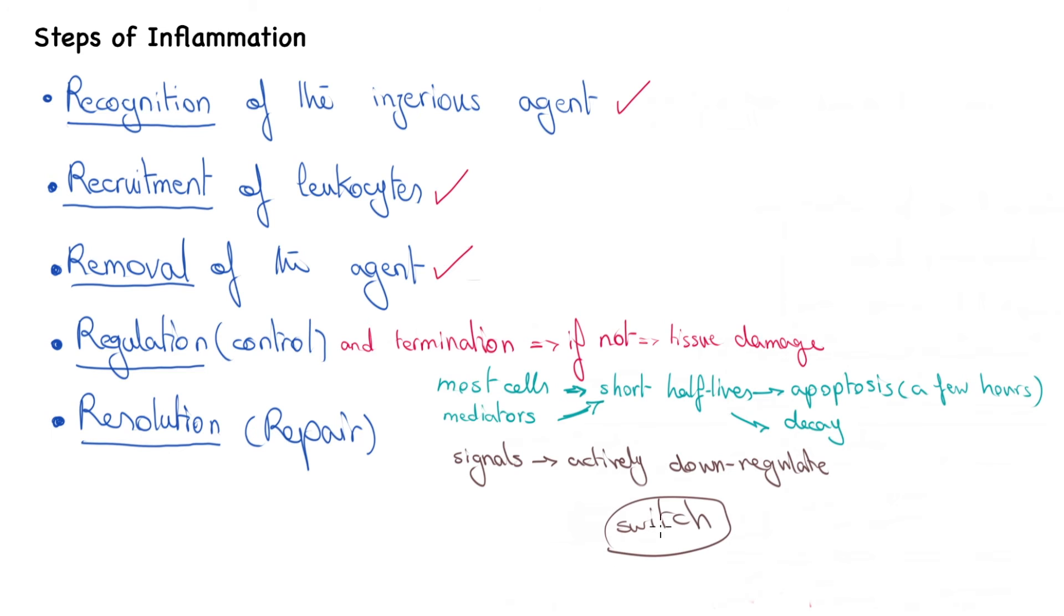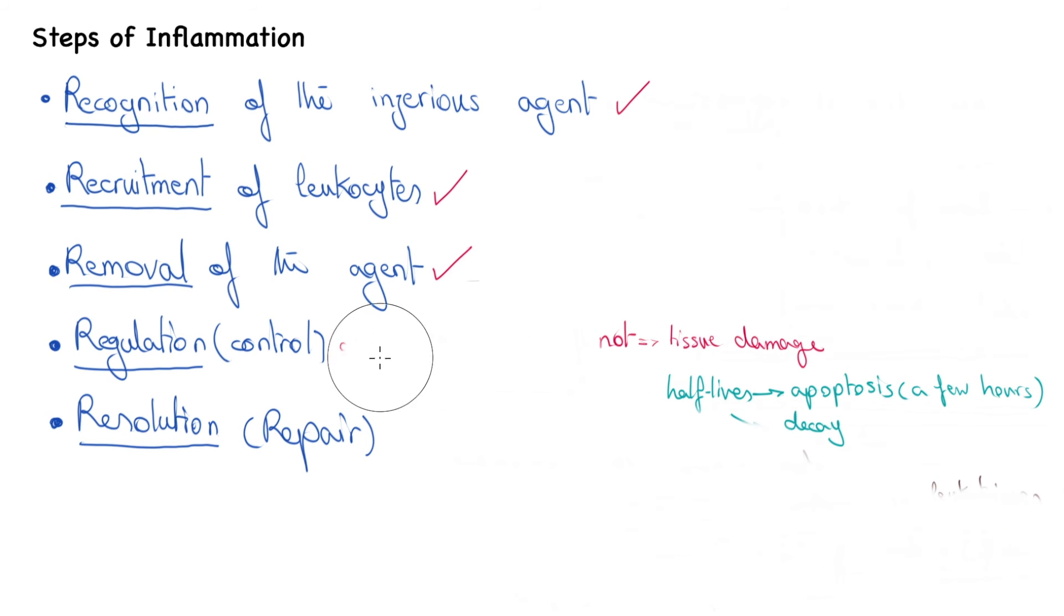There are also a number of signals that actively down-regulate the inflammatory response. This happens mostly by a switch in the concentration of mediators from pro-inflammatory leukotrienes to anti-inflammatory lipoxins.